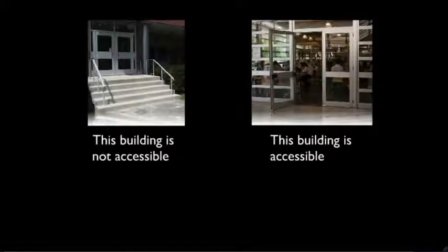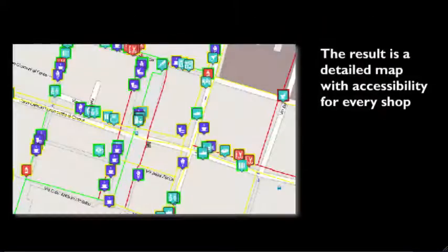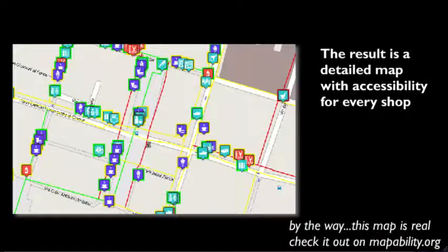Moreover, Mapability users can also help classify buildings according to their accessibility. This building is not accessible because of the stairs, while this other is accessible because the entrance is at street level. The result is a detailed map with accessibility for every shop or building.